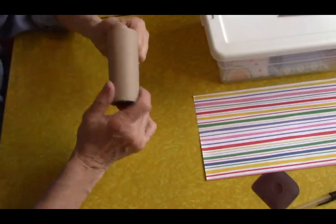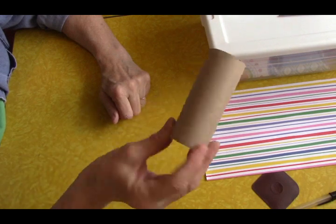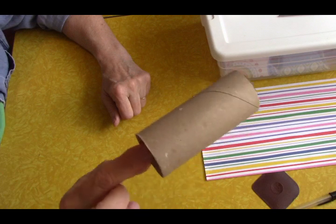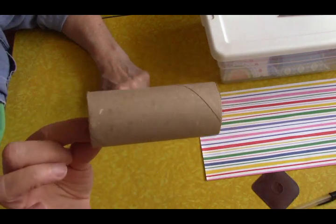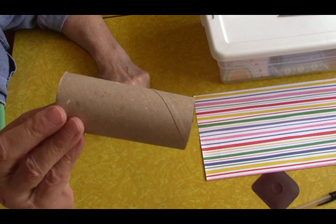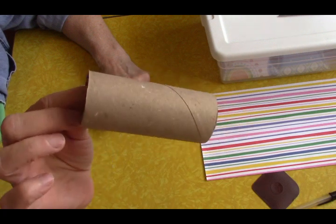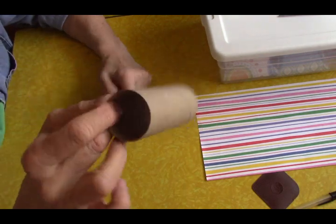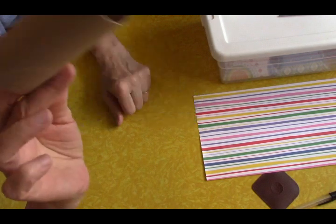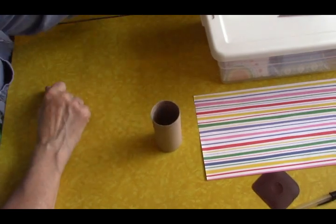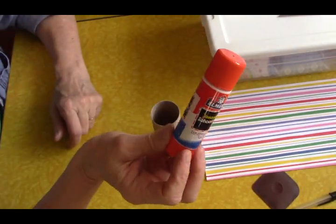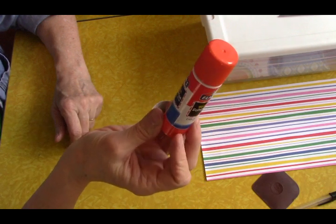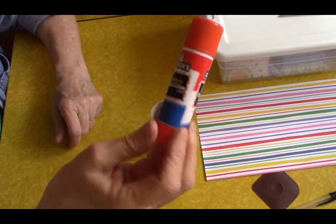This is what you're going to need. You're going to need a cardboard cylinder from a toilet paper roll, or you can use a paper towel cylinder cut down to about the size of a toilet paper roll. You need one or more of these depending on how many you want to make. You're going to need a glue stick because it's less messy and easy to use. I have an Elmer's glue stick here.